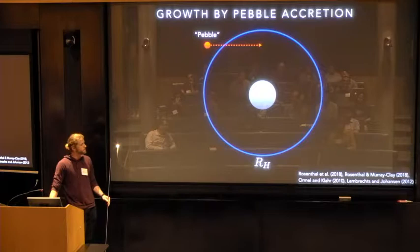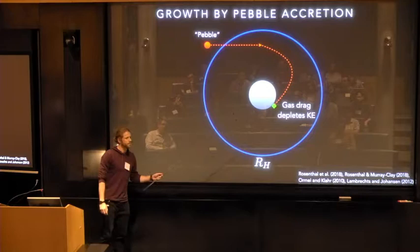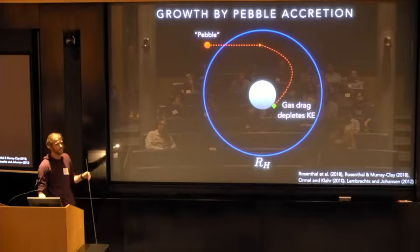So what happens if you bring a pebble into a growing core, that's been shown by a number of authors, is that because the pebbles are of this marginal size, they can actually dissipate their energy during their interaction with the core and become gravitationally bound to the core during this encounter. And this can cause them to be bound on length scales that are much larger than you would expect for planetesimal accretion.